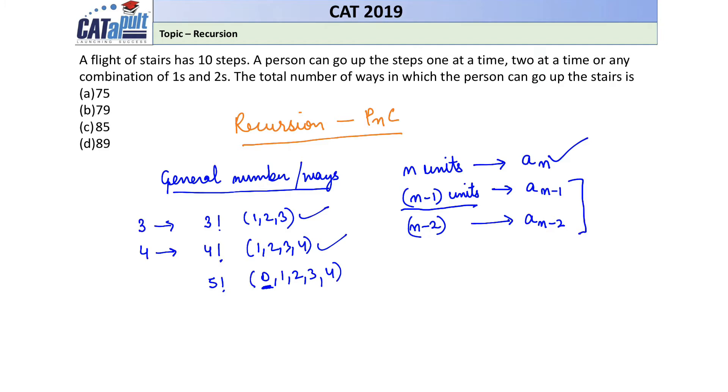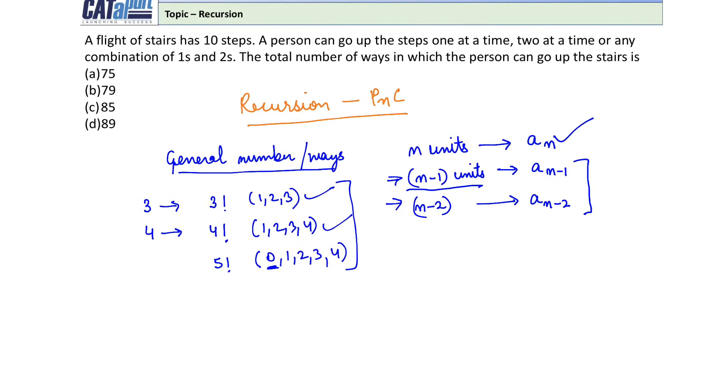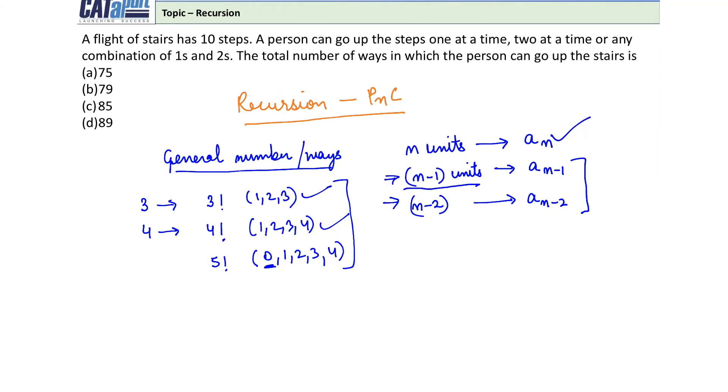So we always need to find out whether the remaining things are in the original condition or not. Let's see the question. The question is: A flight of stairs has 10 steps. A person can go up the steps one at a time or two at a time, so there are two ways he can go up. Or any combination of ones and twos. The total number of ways in which the person can go up the stairs is?